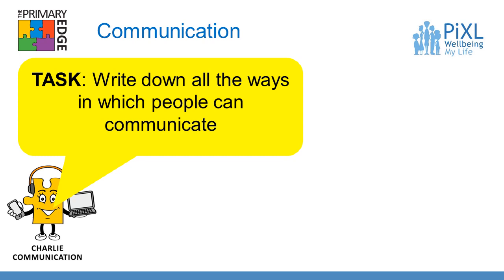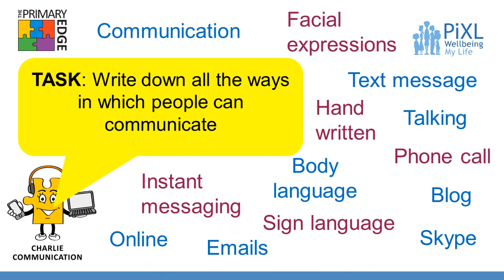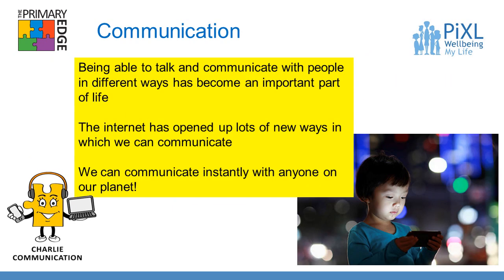Now you have done that, let's see how many you have got. Have you got any of these? You can pause the video and tick them off. Facial expressions — that's not talking; you can signal how you're feeling to one another by using your face. You can use text message, write a handwritten note, talk, make a phone call, use body language, sign language, messaging online, email, Skype, blog — all these ways in which we communicate with one another. Being able to communicate with people in different ways has become an important part of life.